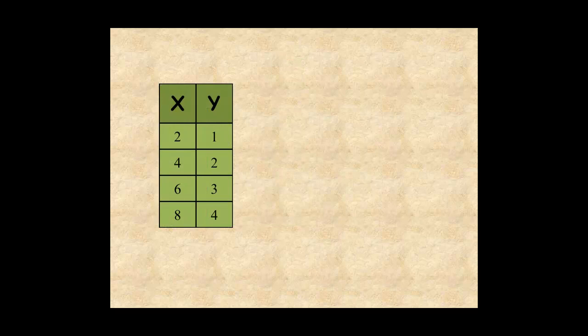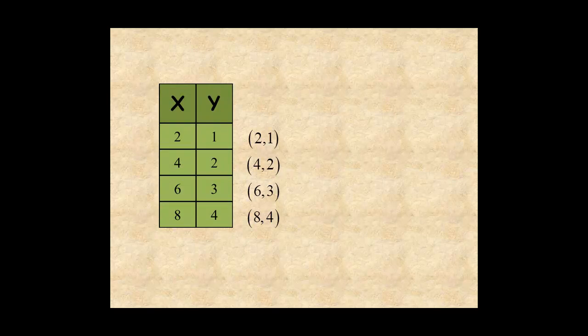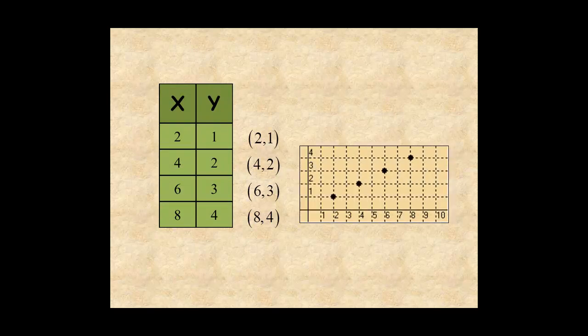The inputs and outputs of a function can be represented as a set of ordered pairs, so you can graph the function on the coordinate plane: 2, 1, 4, 2, 6, 3, and 8, 4.